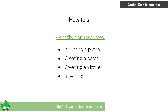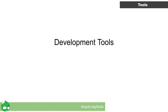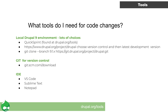Once we have a patch ready, we would come back to the issue queue and upload the patch. But first, we need to be able to make the code change. If you already have an environment capable of running Drupal 9.1.x, Git, and a code editor, then you can skip the tools section. Afterwards we will be running over the creation of a patch. You will need some form of Drupal development environment, Git, and a code editor to get started.